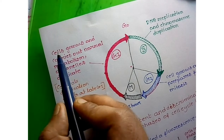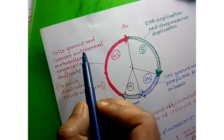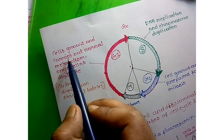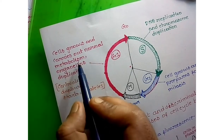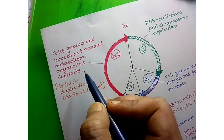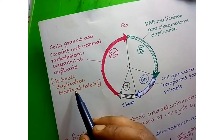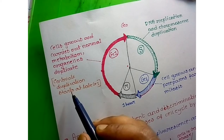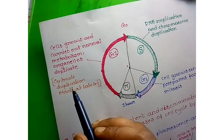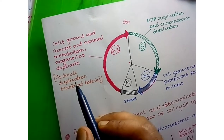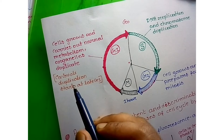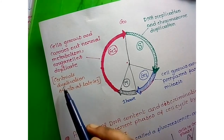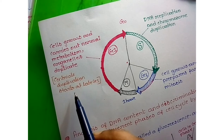In G1 phase, the cell grows — the size of the cell increases — and it carries out normal metabolism. Duplication of organelles initiates in G1 phase. G1 phase is the longest phase of the cell cycle in comparison to the other phases.